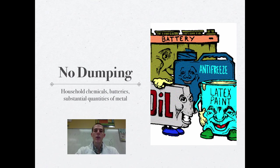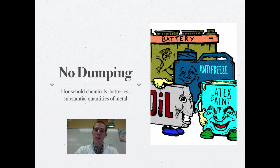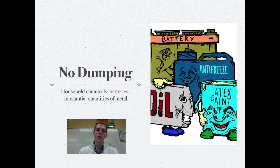When considering what should be put into a landfill, the best candidates are things that cannot be recycled, composted, or that are not hazardous waste. Things that cannot be thrown into landfills include household chemicals, oil, antifreeze, paints, electronics, and batteries — anything with a substantial quantity of metal, because that metal can dissolve and be carried away in the leachate. Things good for landfills are items that don't compost easily, can't be recycled, and are not toxic. For e-waste and recyclables, there are separate methods for dealing with those types of waste.